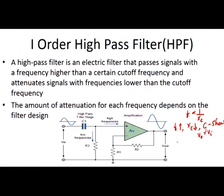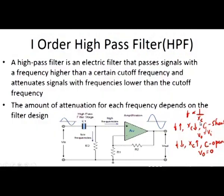If the frequency is reduced and low frequency signals are given, the capacitive reactance is high, so the capacitor acts as an open circuit. With the capacitor as an open circuit, there is no connection between the input and the resistor, so the voltage across the resistor is 0 and the output is 0. Therefore, the capacitor must be in the series arm and the resistor in the shunt arm for a high pass filter, which is reversed for the low pass filter.